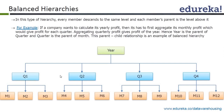To go from month 8 to a year, you have to go through the quarter level, which is Q3. This kind of hierarchy, with no level skipping and uniform children counts, is called a balanced hierarchy.